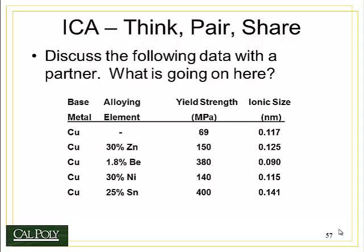Here's a question to consider. Imagine you have a base metal of copper, and you decide to add an alloying element. Your choices are zinc, beryllium, nickel, and tin, with specific amounts: 30% zinc, 1.8% beryllium, 30% nickel, and 25% tin. When you add these different alloying elements, you increase the strength from 69 MPa for pure copper to a much higher level for each element, some higher than others.